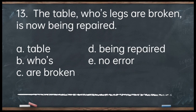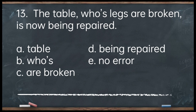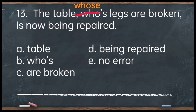Number 13. The table whose legs are broken is now being repaired. A. Table. B. Whose. C. Are broken. D. Being repaired. E. No error. The answer is letter B — 'whose.' The word 'whose' there is confused with a contraction of 'who is.' We need to use the relative pronoun 'whose' — spelled W-H-O-S-E. Corrected: The table whose legs are broken is now being repaired.